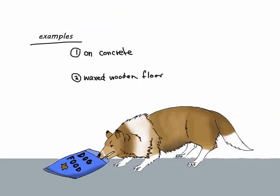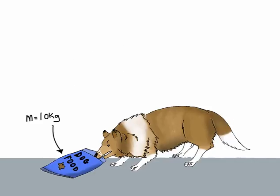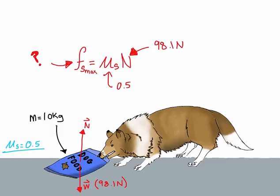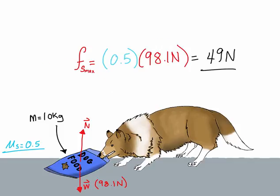So that takes care of the coefficient of friction. Now we can jump back to our example and add some numbers and apply this. So we'll talk about the difference when the bag is dragged on concrete versus when the bag is dragged on a shiny wax floor. Let's say the bag's mass is 10 kg. So its weight will be 98.1 N and the normal force will equal its weight. We'll set the coefficient of static friction to 0.5 assuming the concrete is smooth and not very bumpy. So all we have to do now is find the amount of static friction. And we get 49 N.